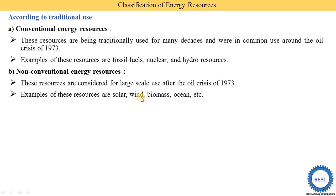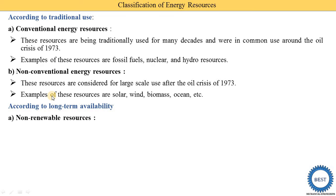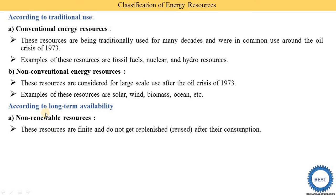The next classification is according to long-term availability, which covers renewable and non-renewable resources. Non-renewable means these resources are finite and do not get reused after consumption — after consuming them we are not able to use them again. Examples of non-renewable resources are fossil fuels and uranium. So we can conclude that conventional energy resources are equal to non-renewable resources.